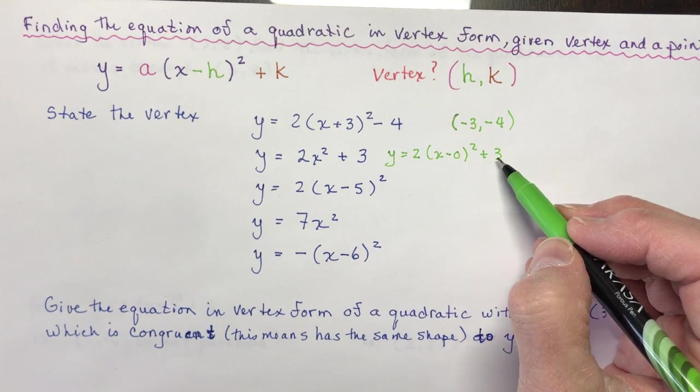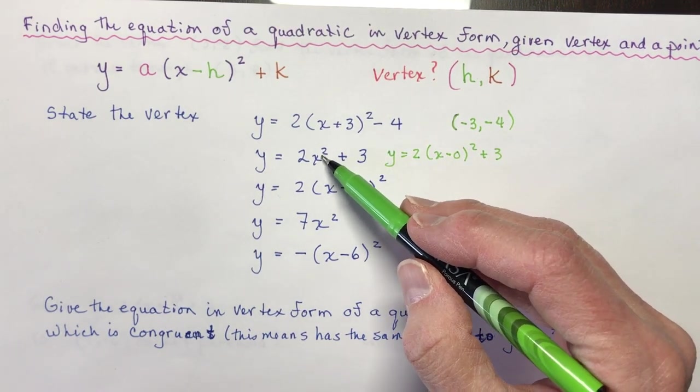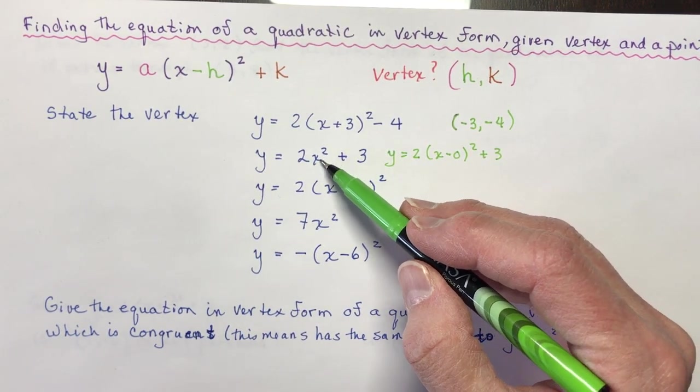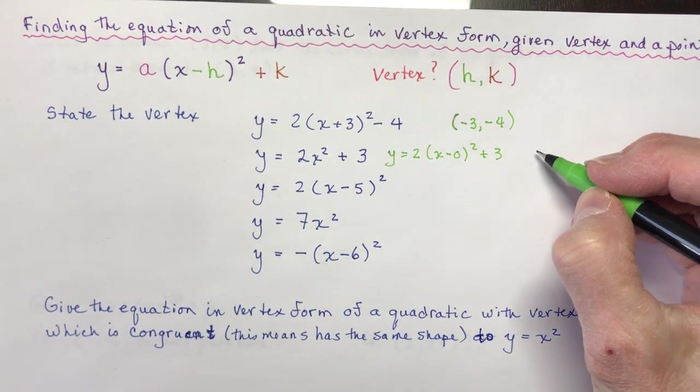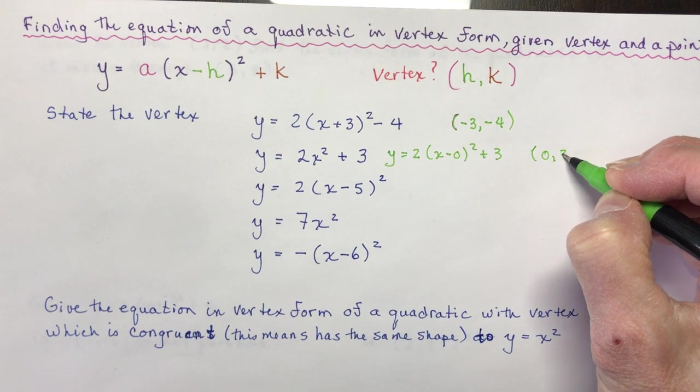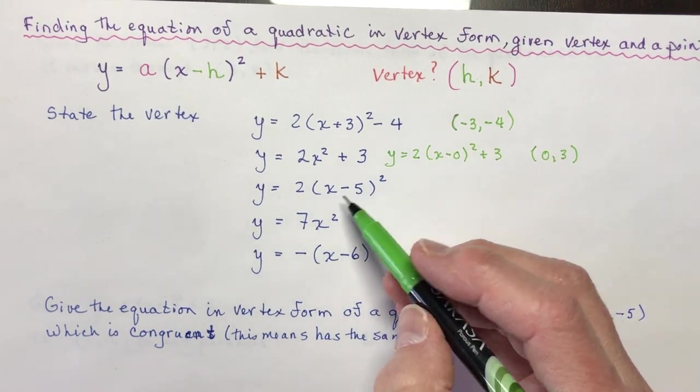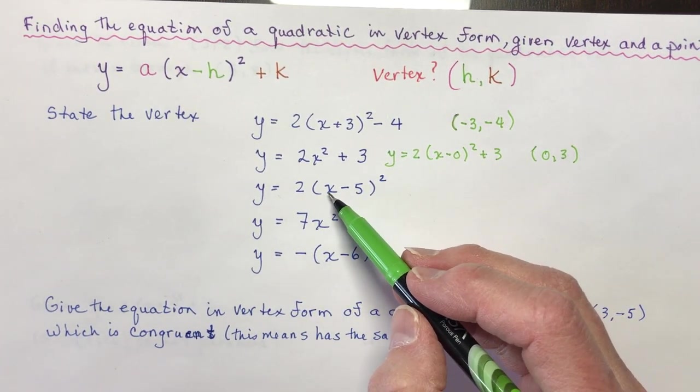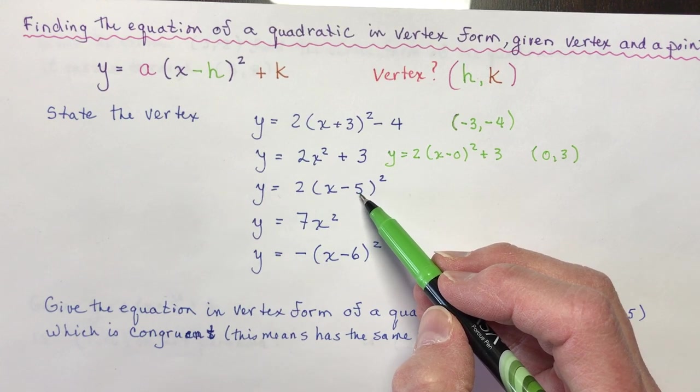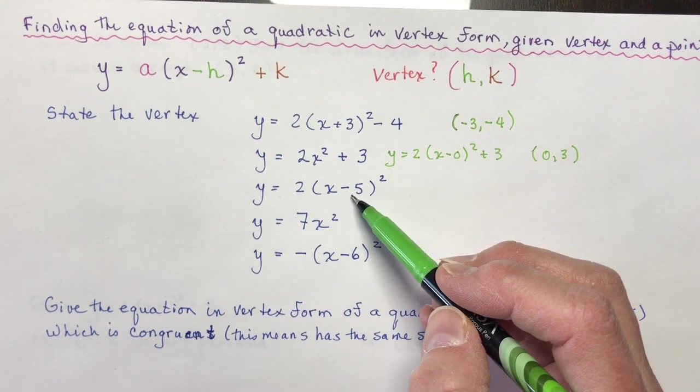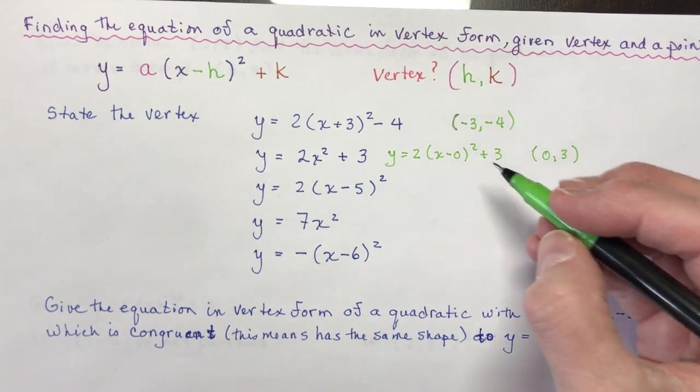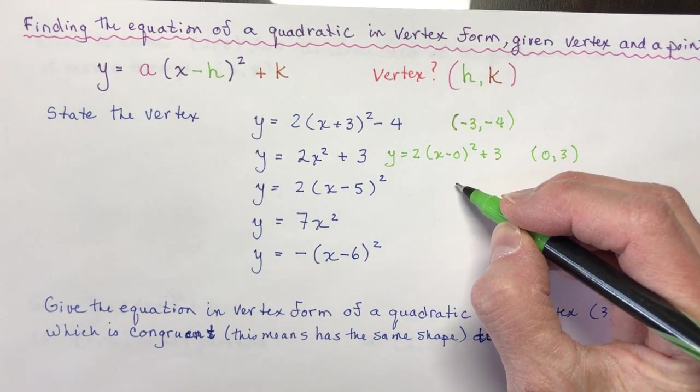Okay, so you see if there's no bracket here with the x, the x does not have a horizontal shift. So the vertex here would be 0 and 3. In this one here, you can see that there is a horizontal shift. And remember, the vertex has nothing to do with the a value here. When I'm looking for the vertex, I just want to know what h and k are.